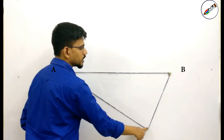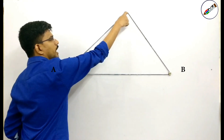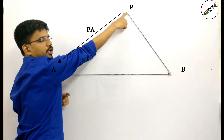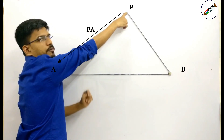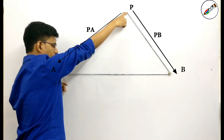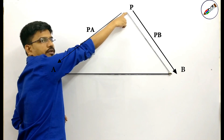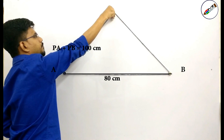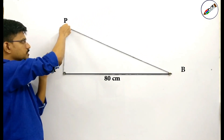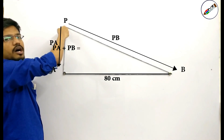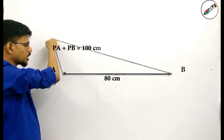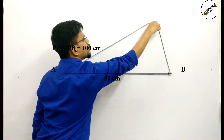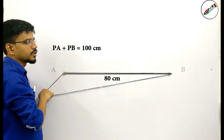Let me take another point P over here. Again, the distance of point P from point A is PA and the distance of point P from point B is PB. As this thread spans a distance of 80 centimetres, again you have PA plus PB equal to 100. The same will happen at any position — again the distance PA plus PB is equal to 100 centimetres. Every particular point that I am spanning has the sum of its distances as 100 centimetres.